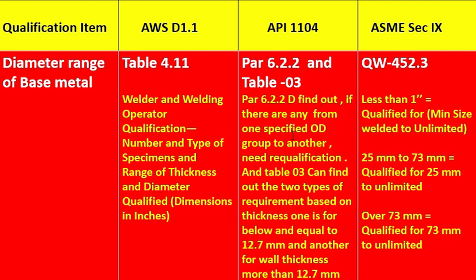In API 1104, if there is any change from one specified OD group to another, re-qualification is needed. Table 3 again covers wall thickness below 12.7 mm and more than 12.7 mm. In ASME Section 9 QW-452.3: less than 25 mm qualifies for minimum size to unlimited; 25 mm to 73 mm qualifies for 25 mm to unlimited; over 73 mm qualifies for 73 mm to unlimited.